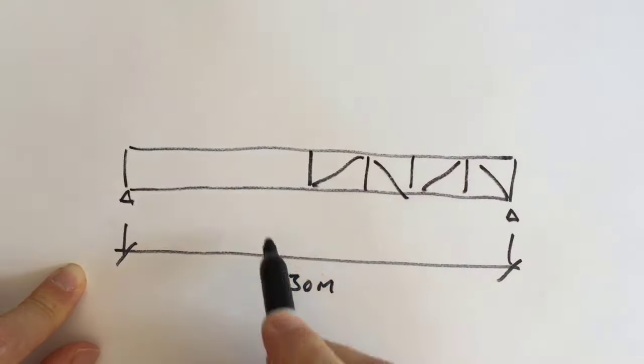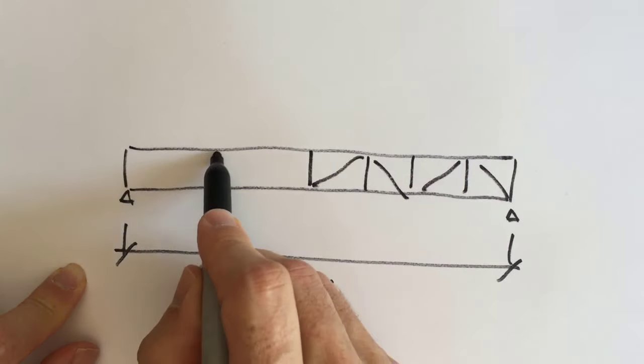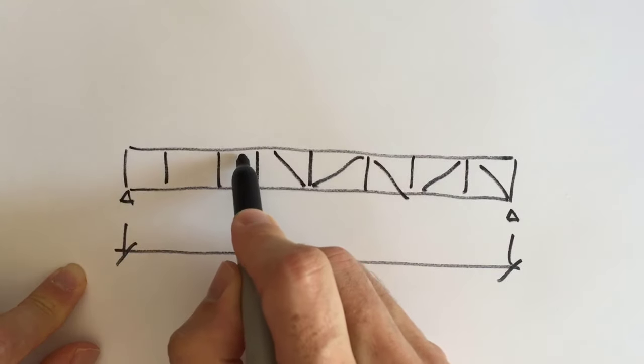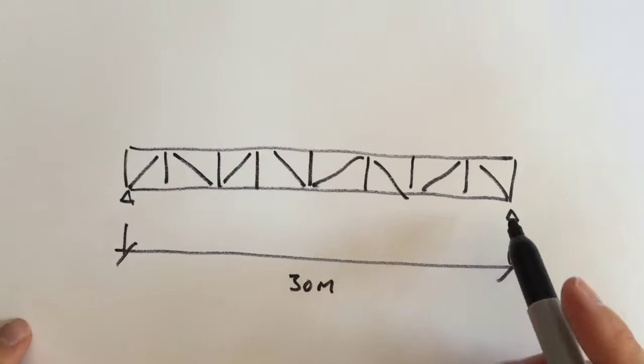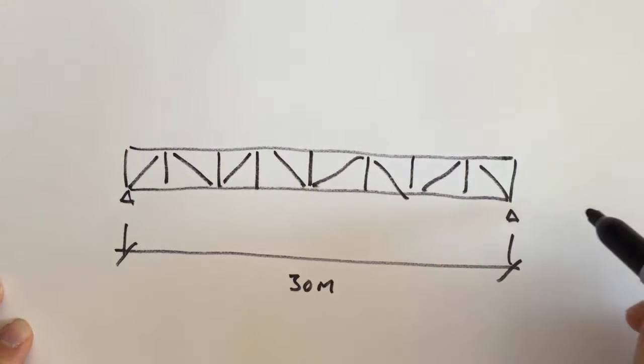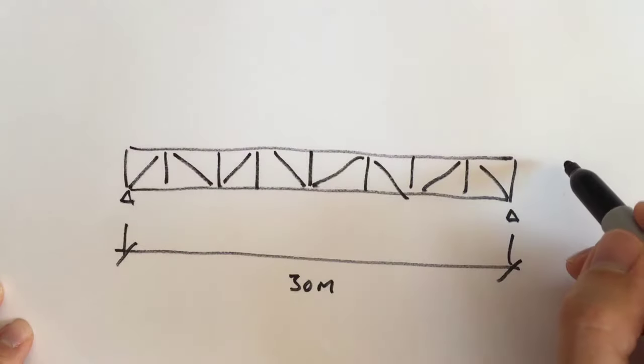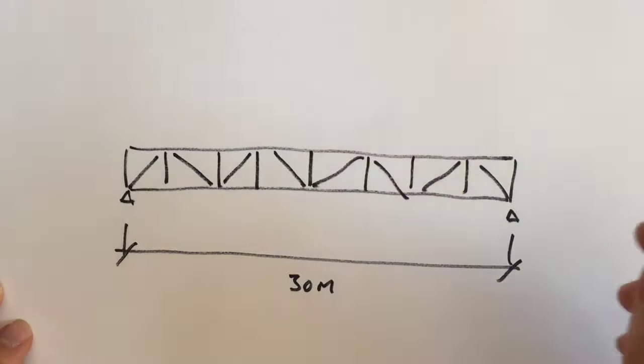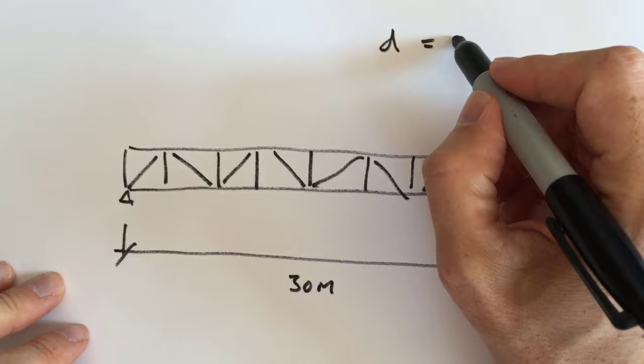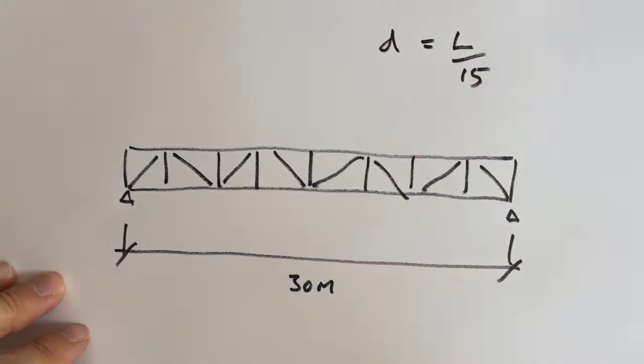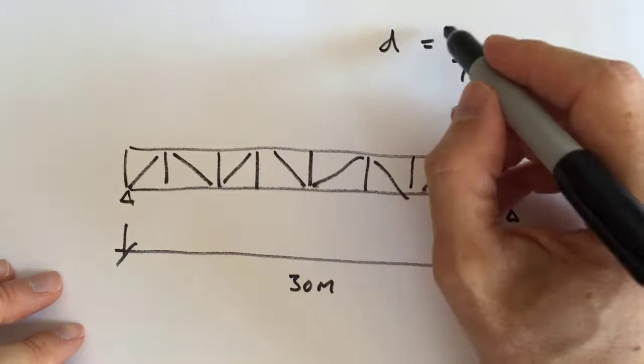So you might have something along these lines here. So we have the supports at the end, we have a steel truss and it's spanning 30 metres. So the first formula I want you to think about and remember, this is particularly useful in an exam situation.